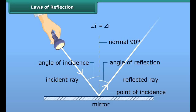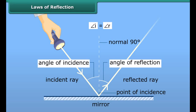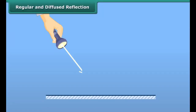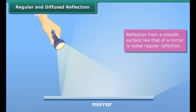The reflection of light at a surface obeys the following two laws, which are called the laws of reflection. According to the first law, the angle of incidence is always equal to the angle of reflection — that is, angle I is equal to angle R. According to the second law, the incident ray, the normal at the point of incidence, and the reflected ray all lie in the same plane.